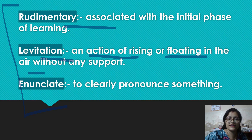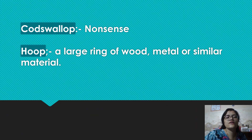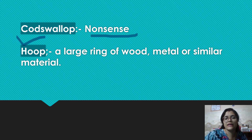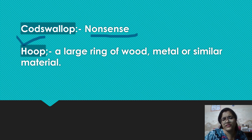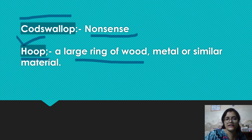Okay, next is enunciate — enunciate means to clearly pronounce something. When you are pronouncing something and you are very clear with it, then you are enunciating it. Okay, next is cockalorum — it's a very fancy word, which is used when you have to say something like about something very nonsensical. If you are referring to something which is not likable, then you are going to say cockalorum. Okay, next we have hoop — so hoop is a large ring of wood, metal or similar material.